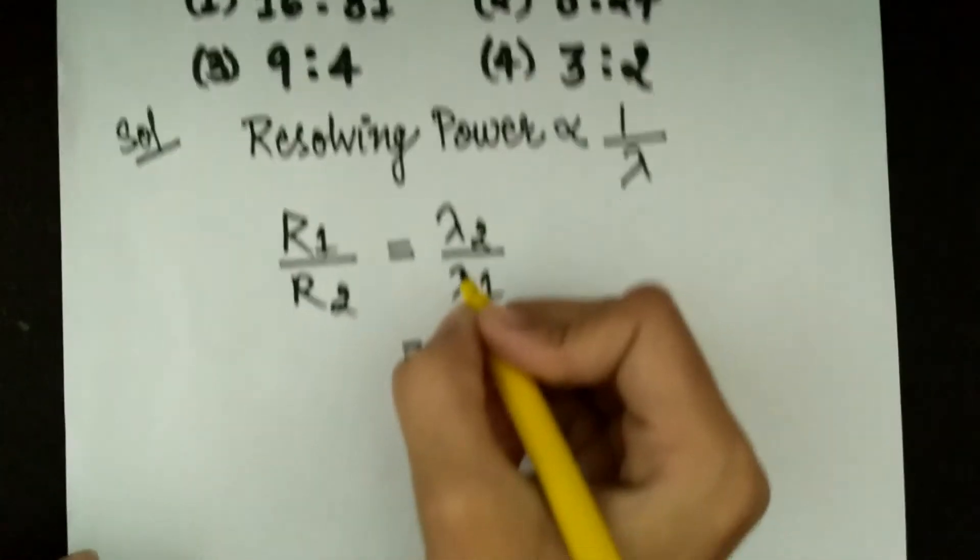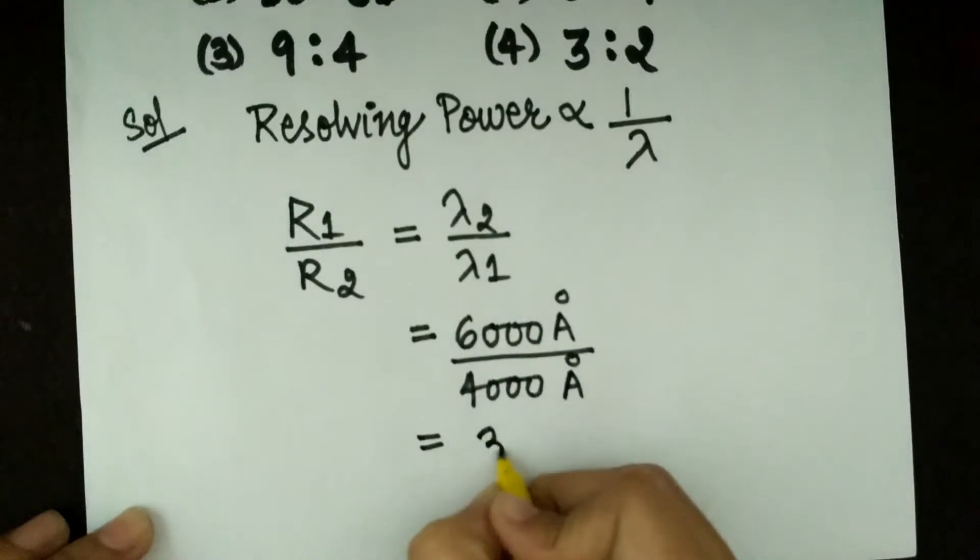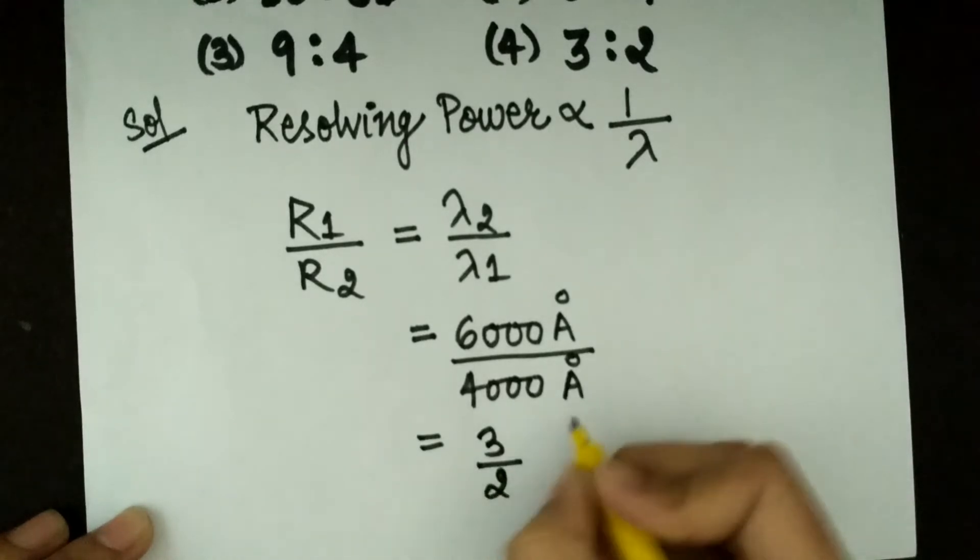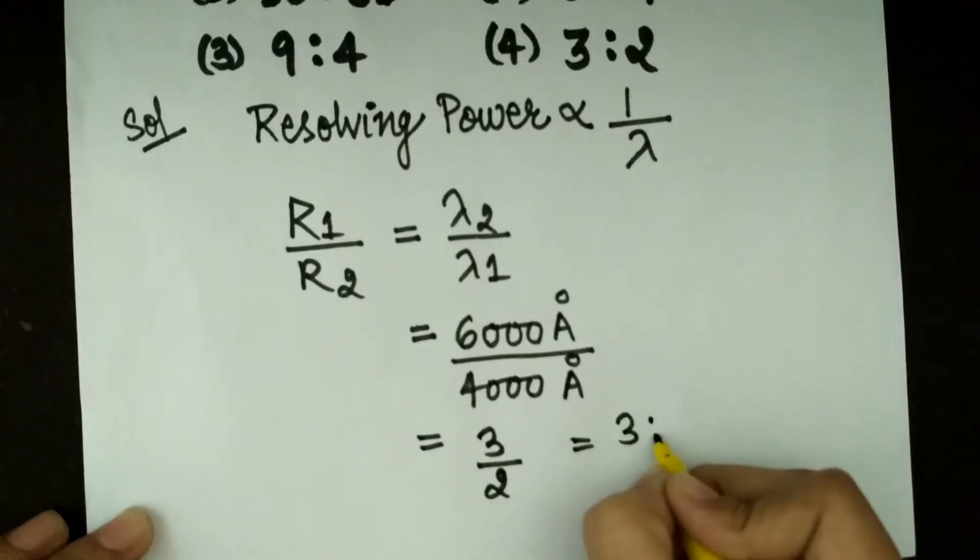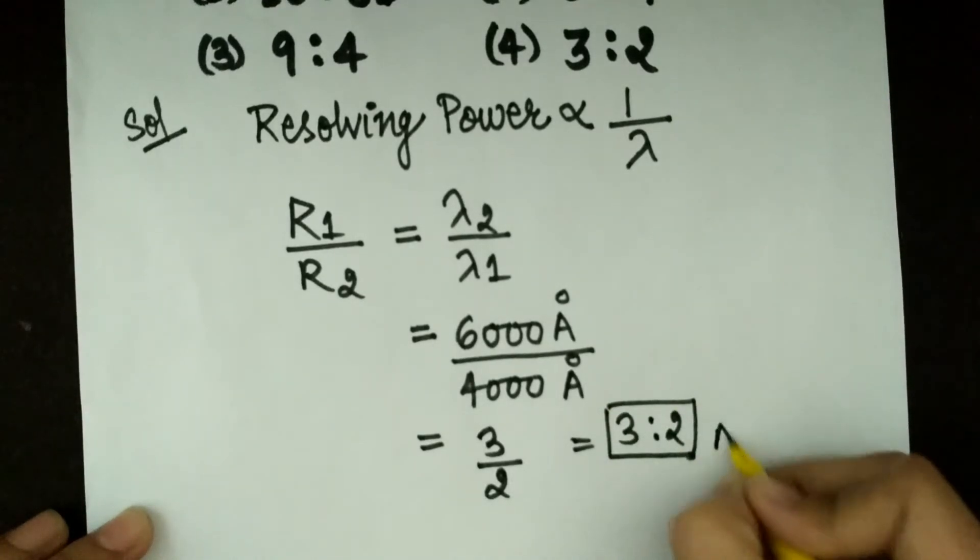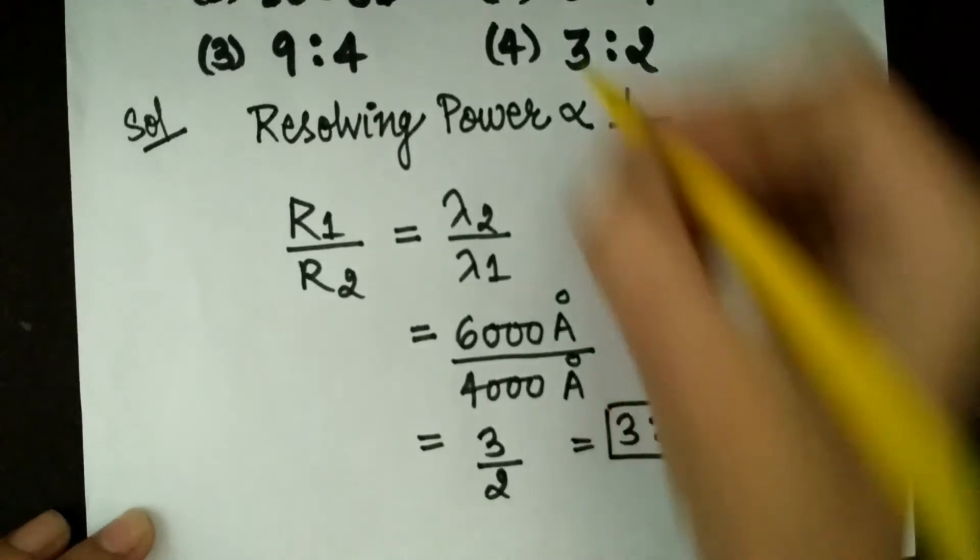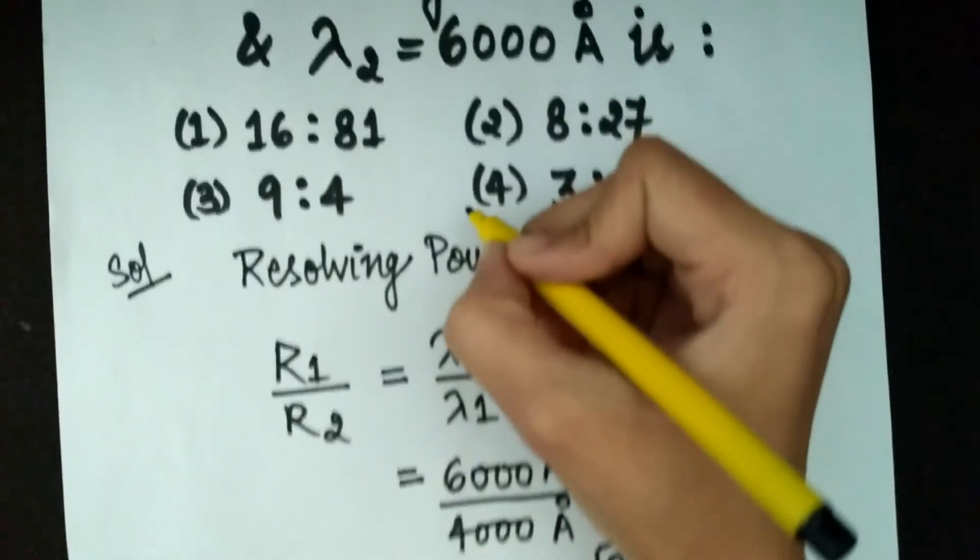So on dividing we get 3 by 2, that is 3 ratio 2. This is the required answer. So the correct option is option number 4.